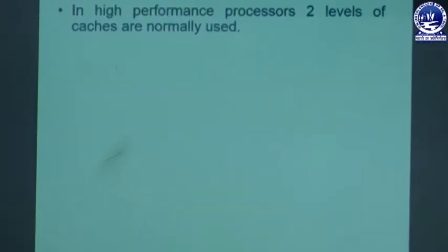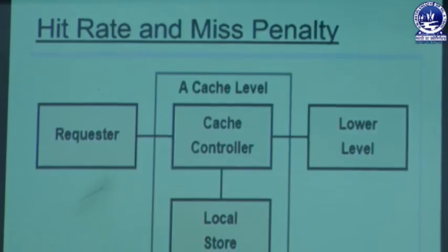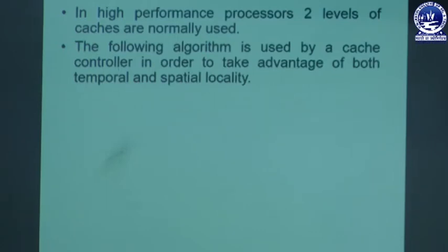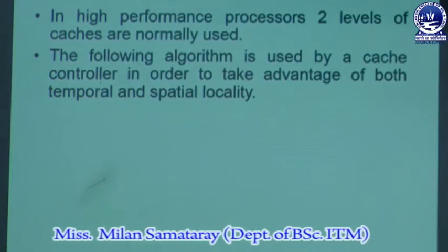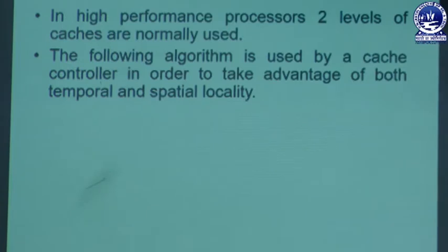In high performance processors there are two levels of cache memory — L1 and L2. The following algorithm is used by a cache controller to take advantage of both temporal and spatial locality. As I discussed in previous lectures on locality of reference, there are two types: temporal locality of reference and spatial locality of reference. This algorithm describes how main memory blocks can be referenced to the cache memory.